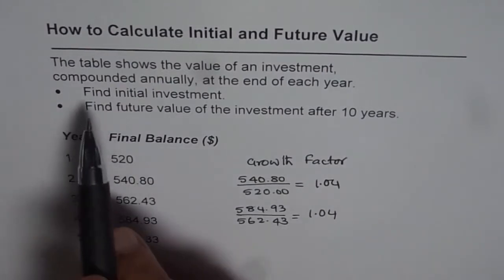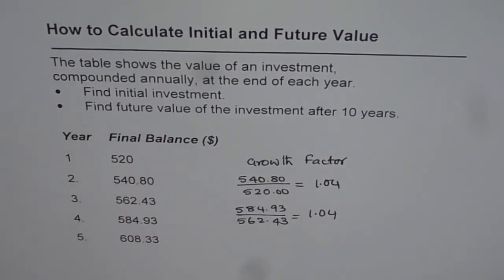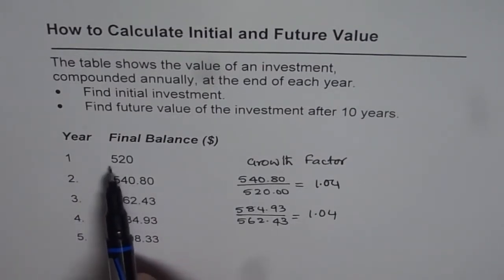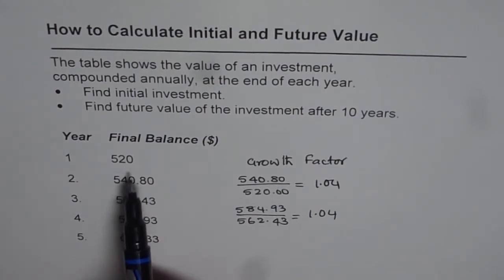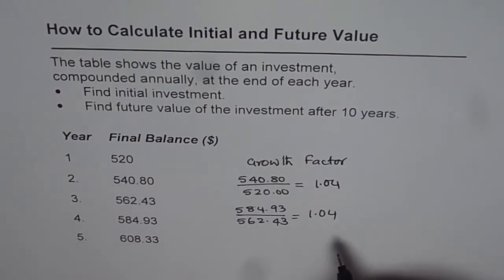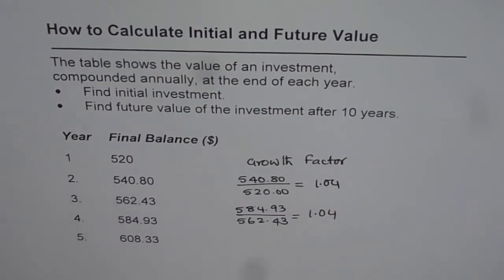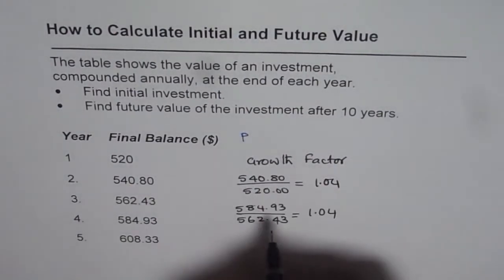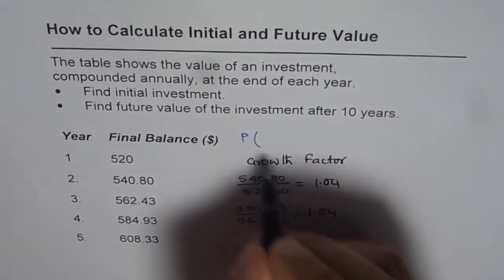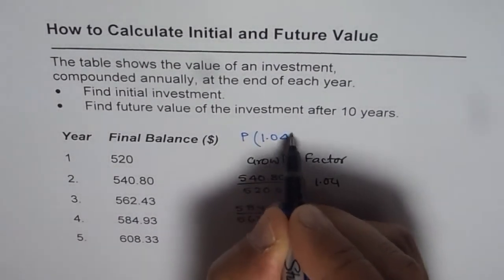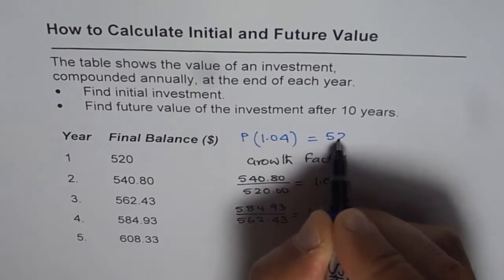Now the question here is find the initial amount. So how are you going to find the initial amount? Now when we know at the end of the year we have 520.00, what should be the initial amount? Well if the growth factor is 1.04, that means initial amount times 1.04 is equal to 520.00. So if I say that the initial amount is the principal amount P, then P times 1.04 should be equal to 520.00.